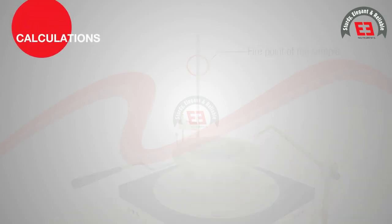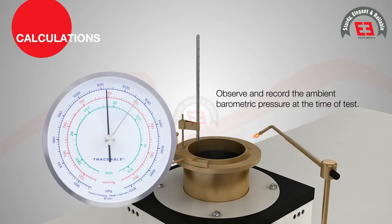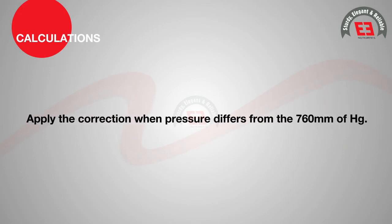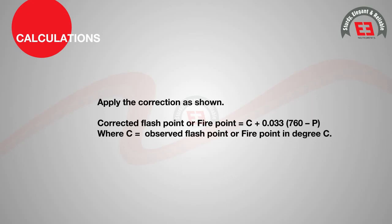Calculations. Observe and record the ambient barometric pressure at the time of test. Apply a correction when pressure differs from 760 mm of Hg. The corrected flash point or fire point is equal to C + 0.033 × (760 − P), where C is the observed flash point or fire point in degrees Celsius and P is the ambient barometric pressure in mm of Hg.